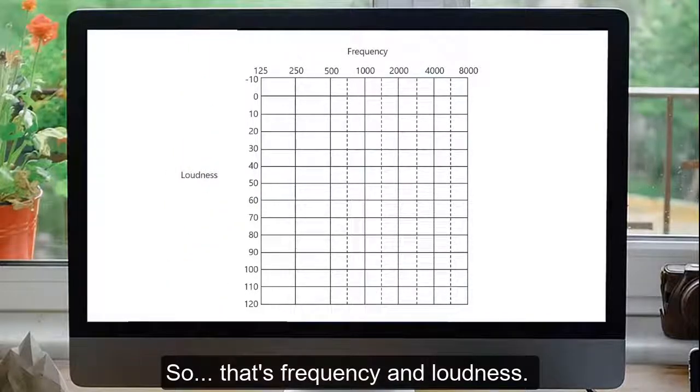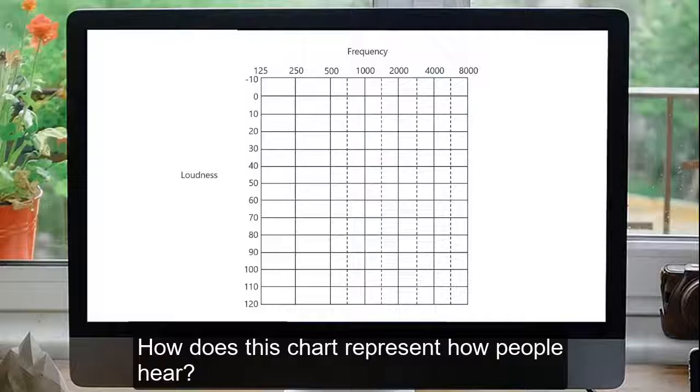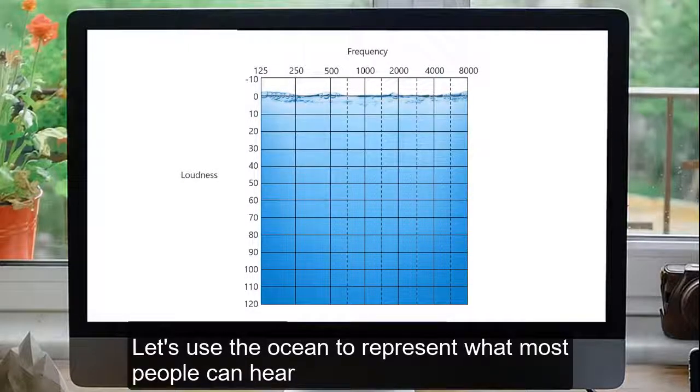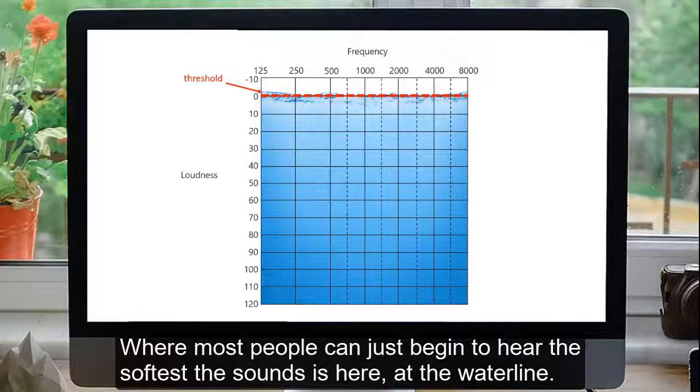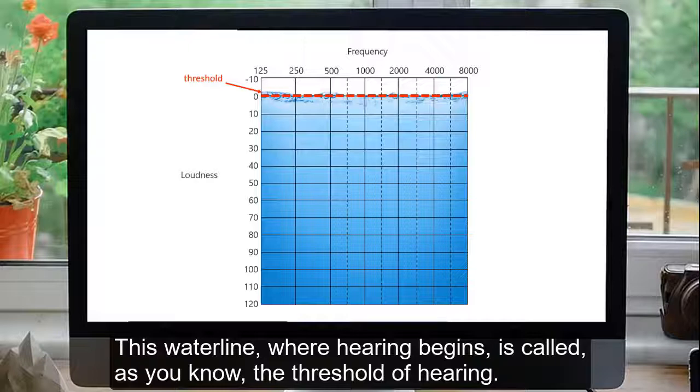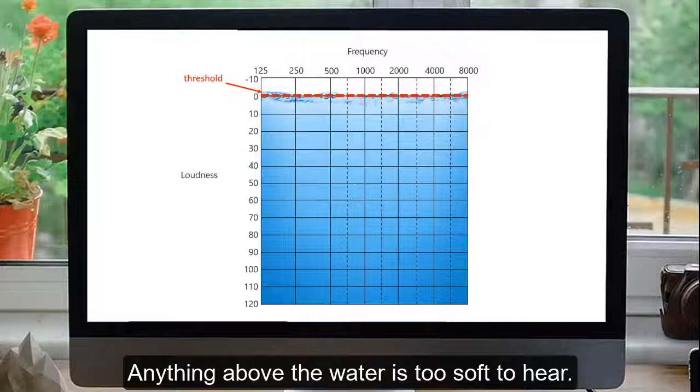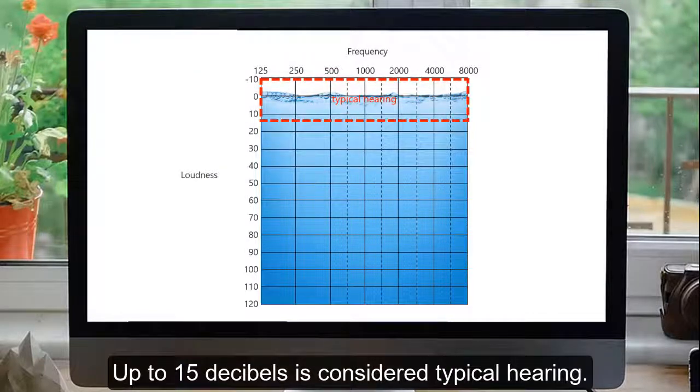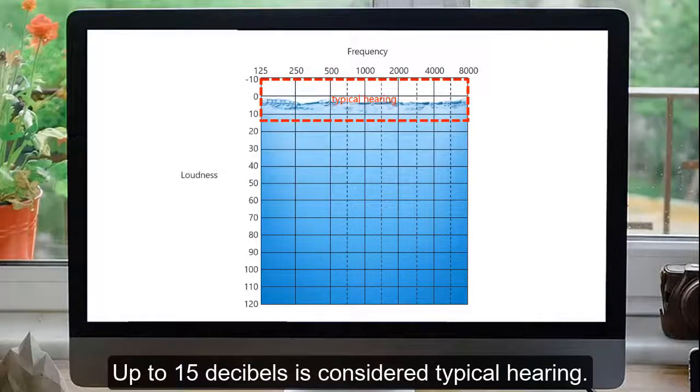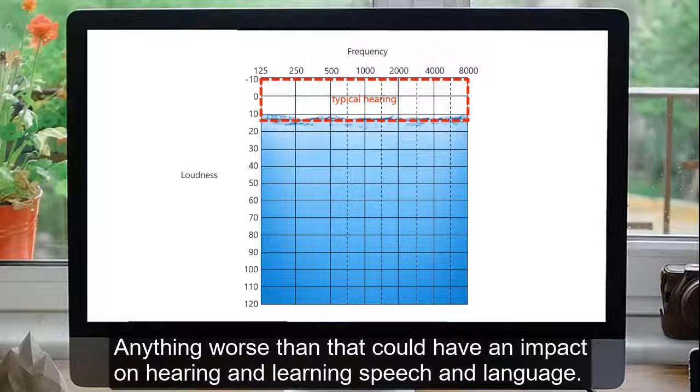So, that's frequency and loudness. How does this chart represent how people hear? Let's use the ocean to represent what most people can hear, and then compare that to the results we have for a child who has hearing loss. Where most people can just begin to hear the softest sounds is here, at the waterline. This waterline where hearing begins is called the threshold of hearing. Anything above the water is too soft to hear. Some people hear better, and some people hear worse than this. Up to 15 decibels is considered typical hearing. Anything worse than that could have an impact on hearing and learning speech and language.